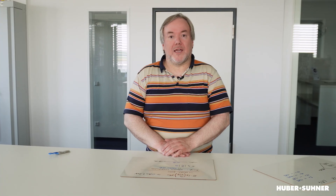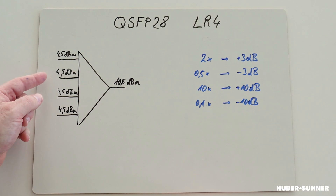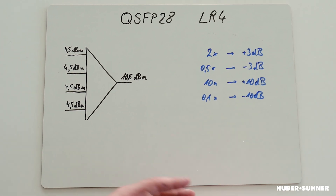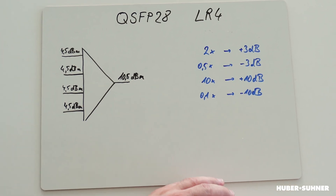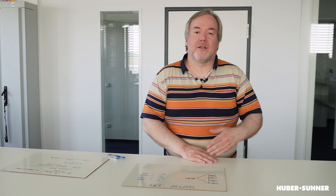Things get a little bit more complicated if, for example, we have a transceiver — this is an LR4 transceiver. It has four laser sources inside and we want to calculate what the output power of that is. Here in this example you can see we have four lasers each with 4.5 dBm and the calculated output power is 10.5 dBm. At first glance you would have expected 18 dBm. The normal way is to retransfer to the linear milliwatt scale, add all the power values up, and then retransfer to the logarithmic dBm scale.